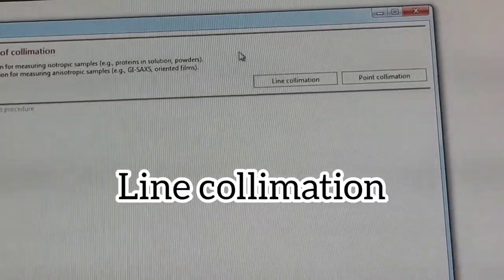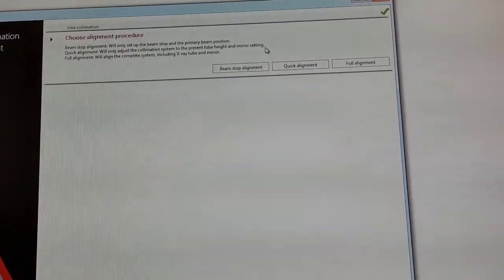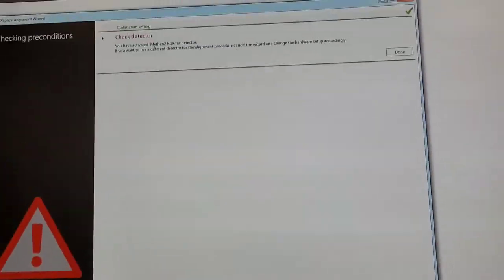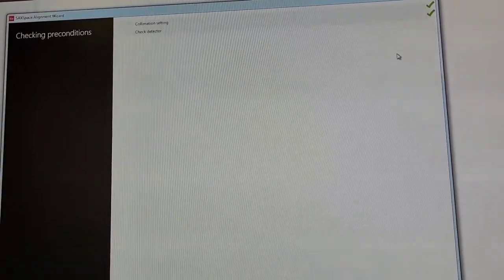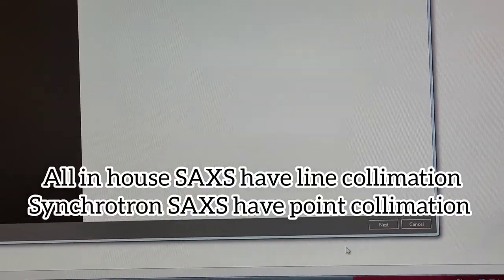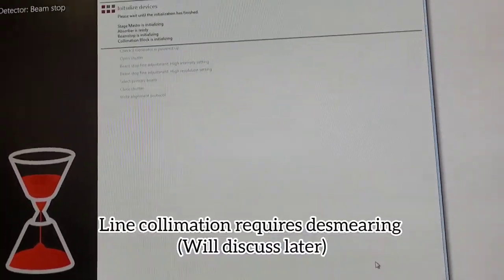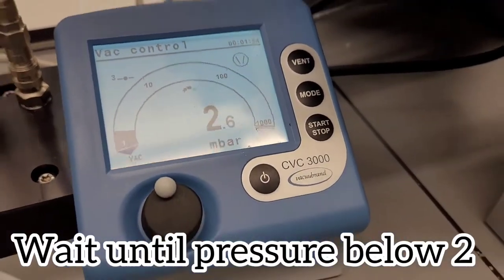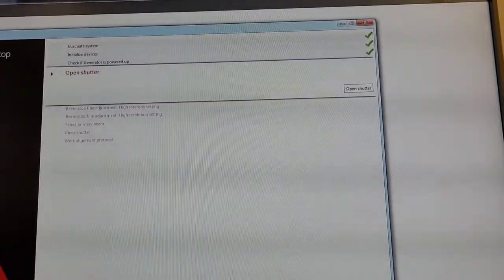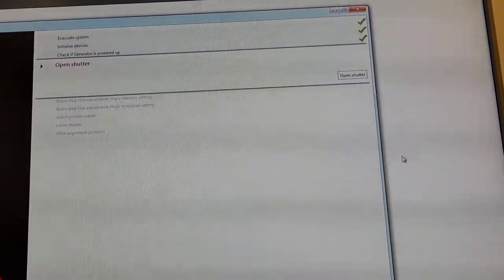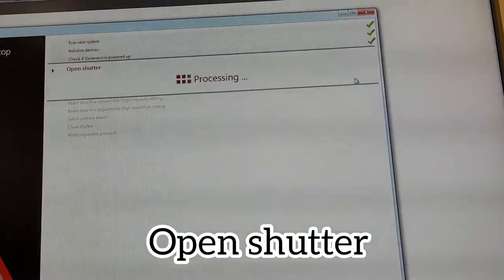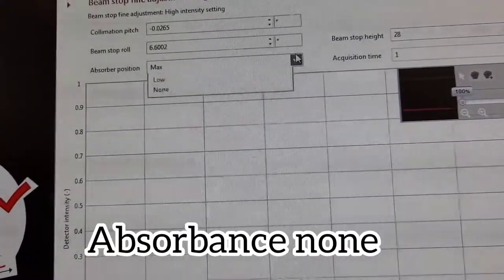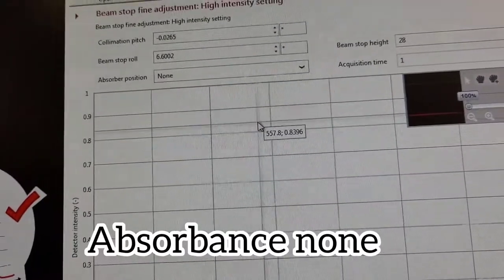Before anything we have to do beam stop alignment and select line collimation. Most of the in-house SAXS instruments have line collimation but the ones at other beamlines have point collimation. With line collimation in the processing we also do something called de-smearing, and I will talk about that later in detail.